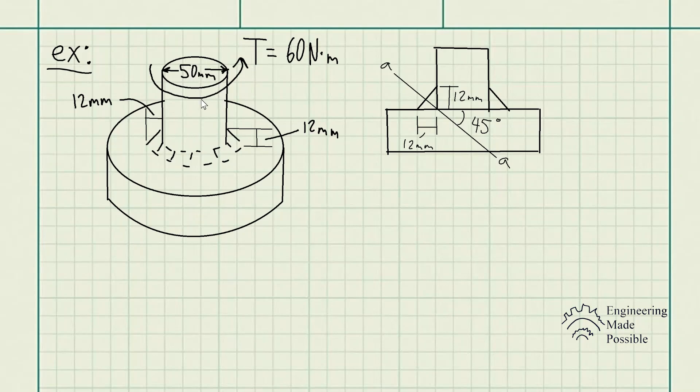Now here's a side profile view of that shaft and the weld. We see section aa is the critical point in which the weld could fail due to the shear stress. And of course we have the dimensions again: 12 millimeters is the length and the height of that fillet weld.